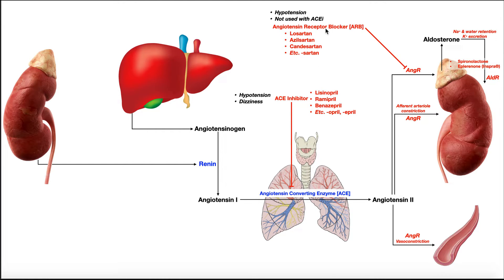The second drug class is the angiotensin receptor blocker, usually abbreviated ARB. When angiotensin II functions, it has to bind to a receptor — it's a hormone, so it must bind to a receptor regardless of which tissue it's acting at. These receptor blockers prevent angiotensin II from promoting vasoconstriction throughout the peripheral vasculature. If you can't have as much constriction throughout the peripheral vasculature, you go more in favor of dilation, which lowers blood pressure peripherally. It also prevents constriction at the afferent arteriole, and prevents the release of aldosterone since angiotensin II binding to its receptor is required for aldosterone to be released.